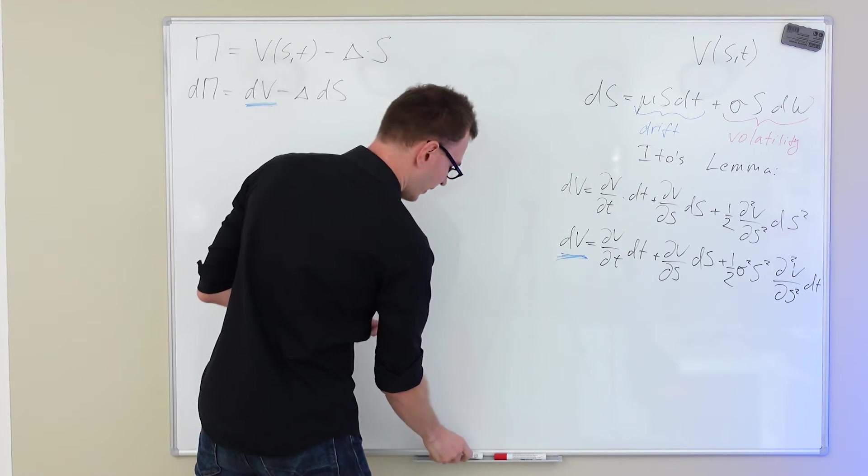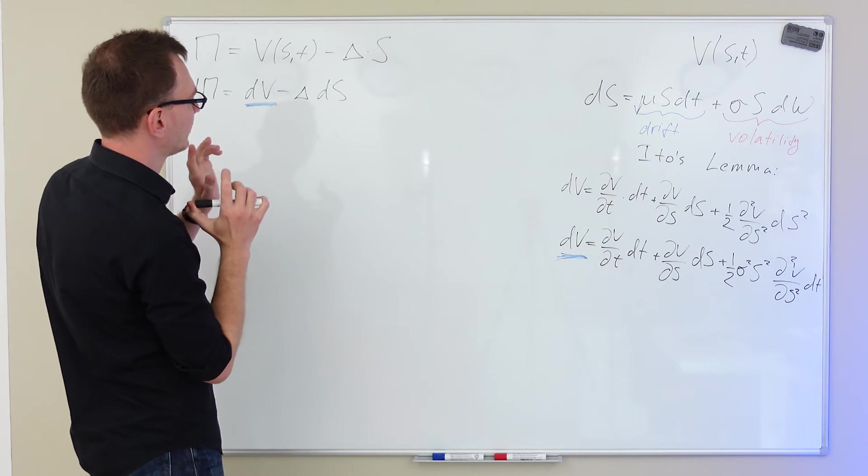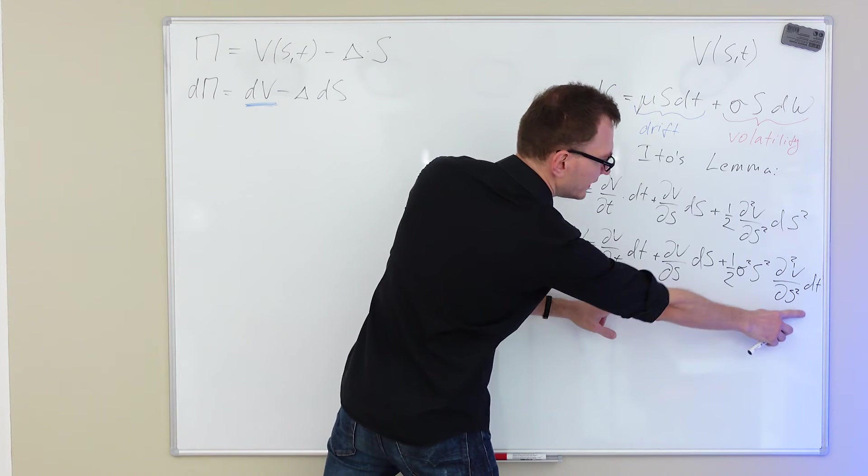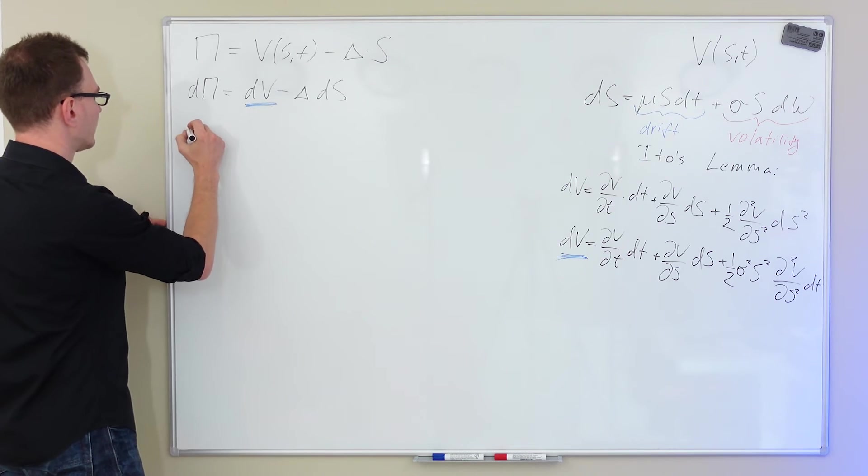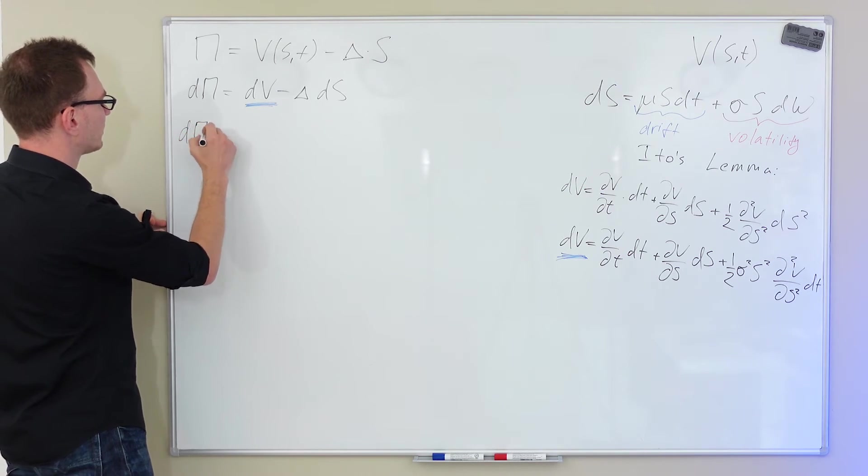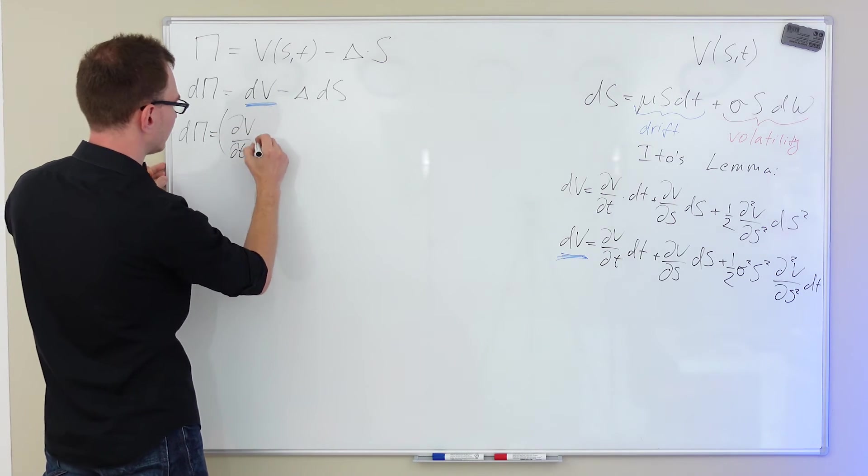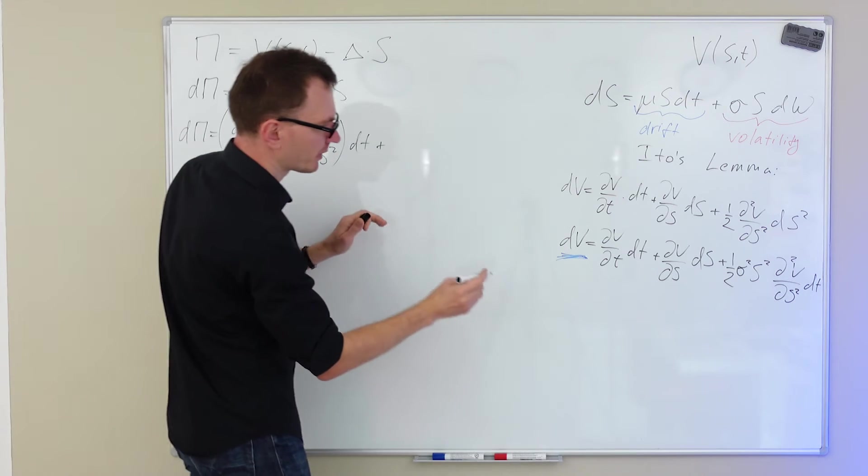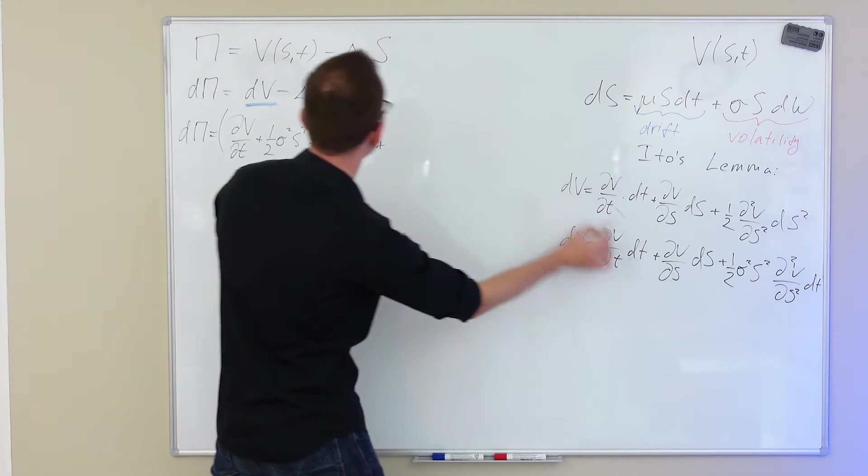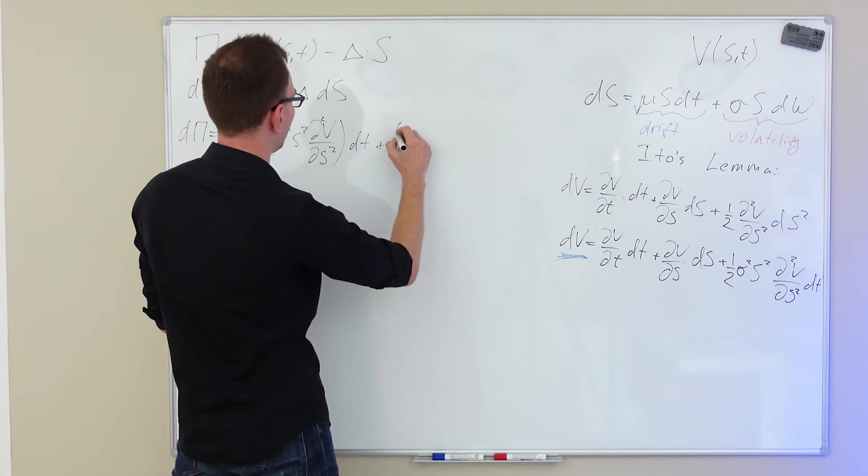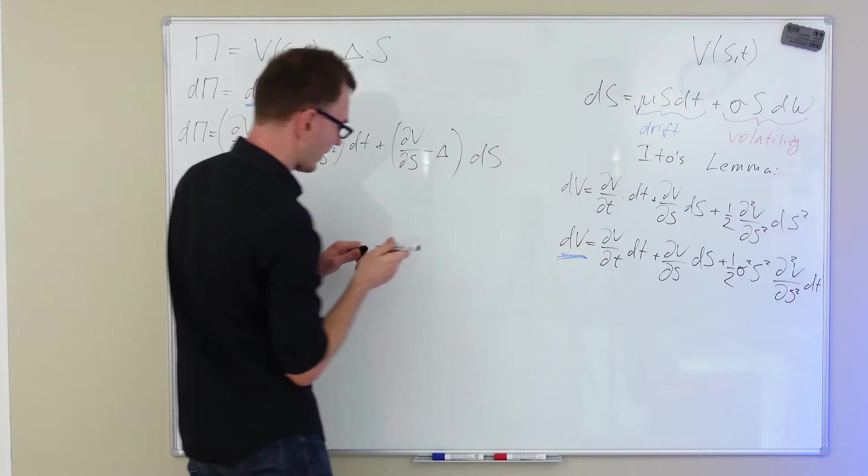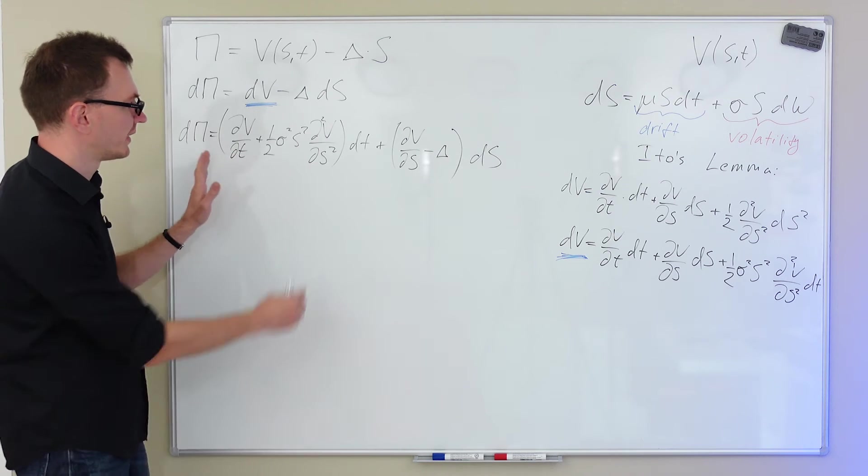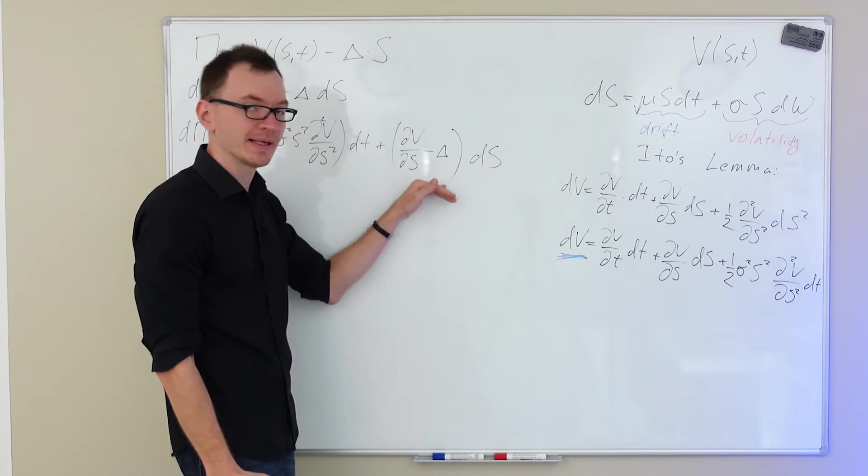And see what we have. If I do that, I will have dS term right here, and dS term here, and I'll have two dT terms. Let's group them together. So, in this case, dP is going to be equal to the following. So, that's our dT term. Now, let's group the dS term together. So, dS comes from here and from here. So, that's our dS term. Now, as you can see, our portfolio now depends on two terms. The deterministic dT term and the stochastic dS term.